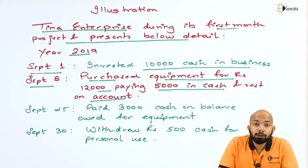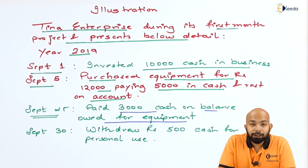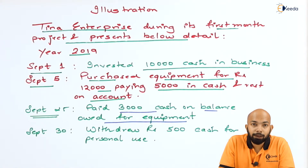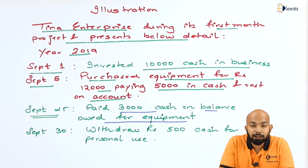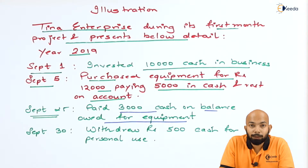The third entry is on September 25th: they paid ₹3,000 cash on the amount owed for the equipment. From the previous entry, we had ₹7,000 balance on accounts payable, out of which ₹3,000 has now been paid. Still ₹4,000 is left as the balance in accounts payable, which you must keep in mind to analyze the closing balance.